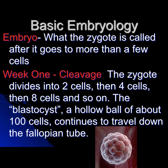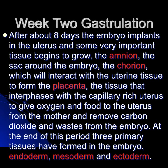A couple of things on basic embryology: the embryo is what the zygote is called after it goes into more than a few cells. Week one: cleavage — the zygote divides into two cells, then four, then eight, and the blastocyst, a hollow ball of about a hundred cells, continues traveling down the fallopian tube. Week two, around eight days: the embryo implants in the uterus and important tissue begins to grow — the amnion, the sac around the embryo, and the chorion, which will interact with the uterine tissue to form the placenta. That tissue interfaces with the capillary-rich uterus to give blood and food to the embryo from the mother and remove carbon dioxide and waste from the embryo — the lifeline between the embryo and the mother.